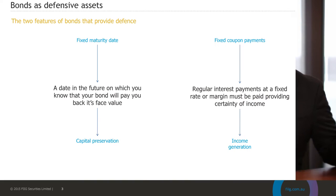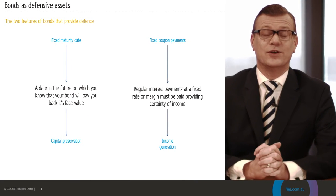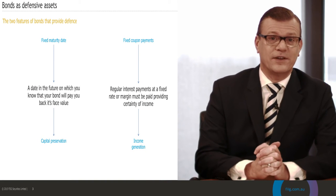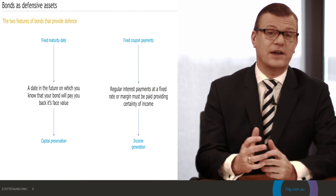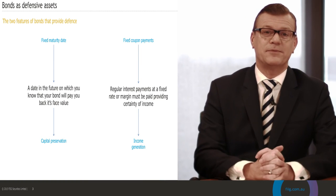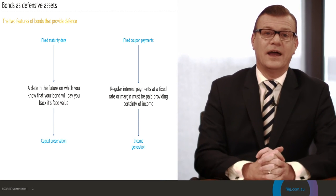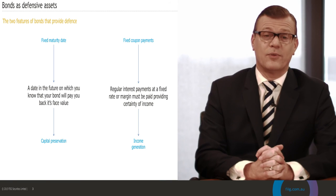The two features of bonds that provide these protections are: first, the fixed maturity date — a point in the future at which you know exactly what your investment is worth, the face value, and that it's paid back to you in cash. Second, you have fixed coupon payments, either at a fixed rate or a fixed margin over prevailing interest rates or over inflation. These coupon payments must be paid on a quarterly or semi-annual basis — they're non-deferrable — and so they work to protect income generation through economic cycles.